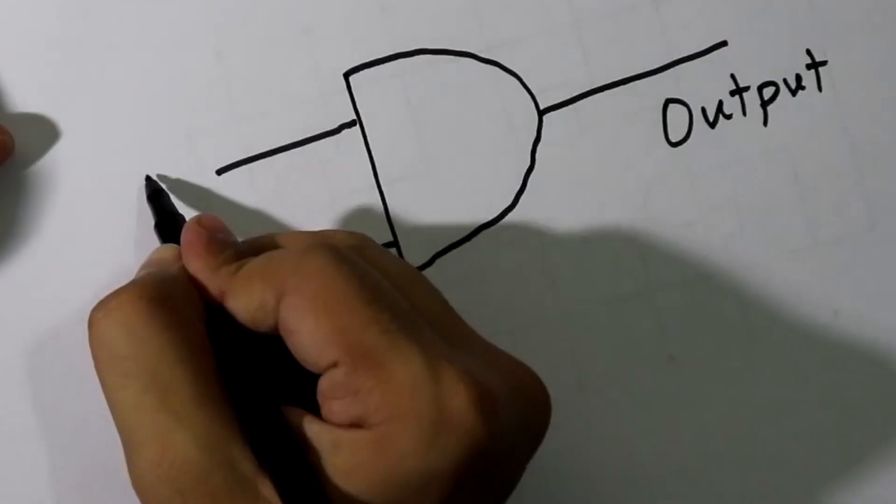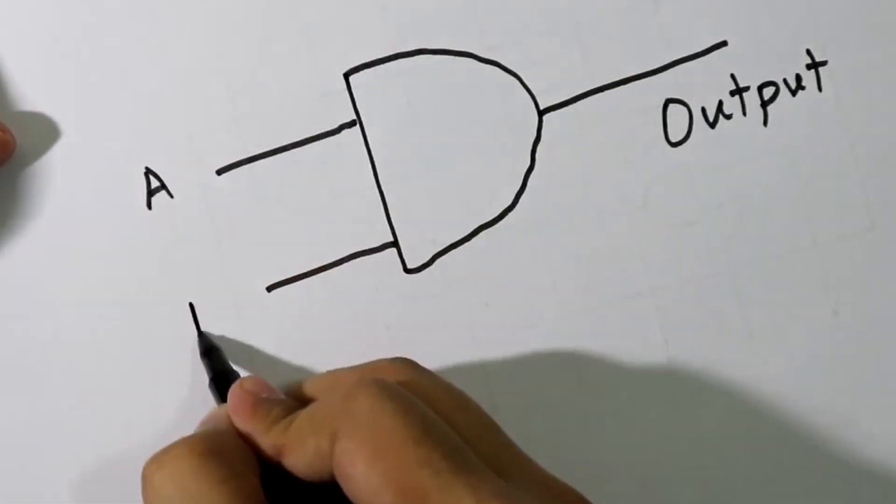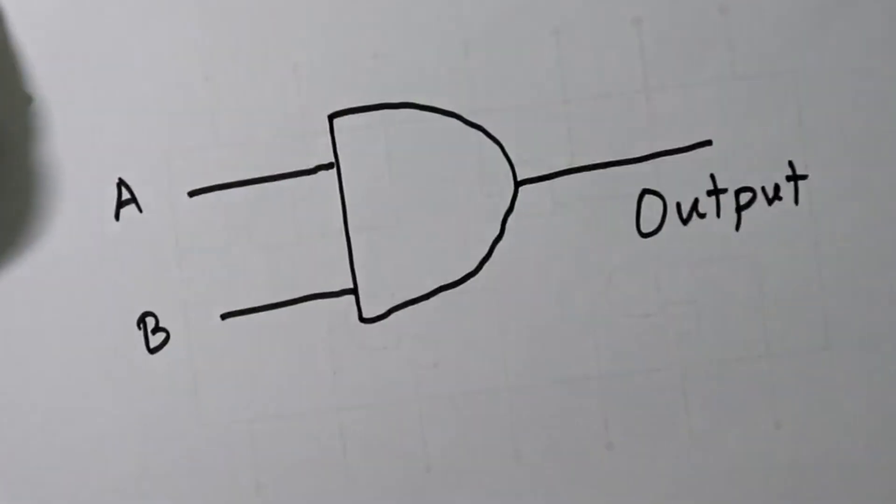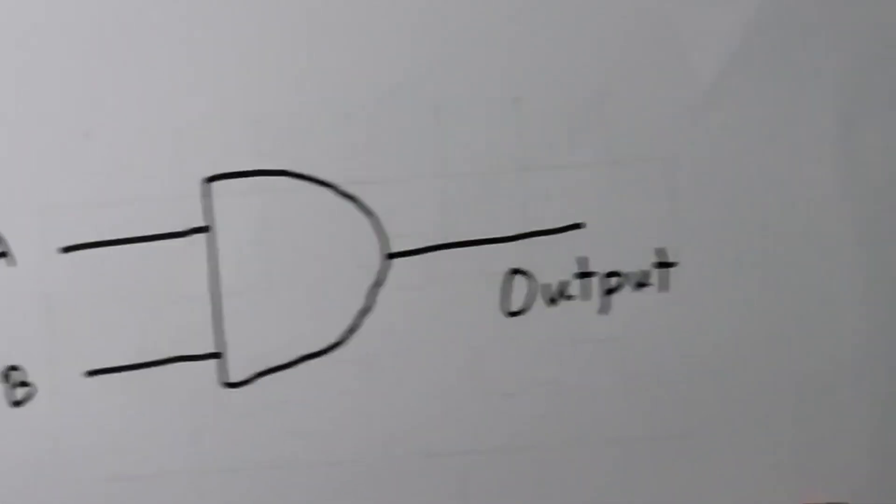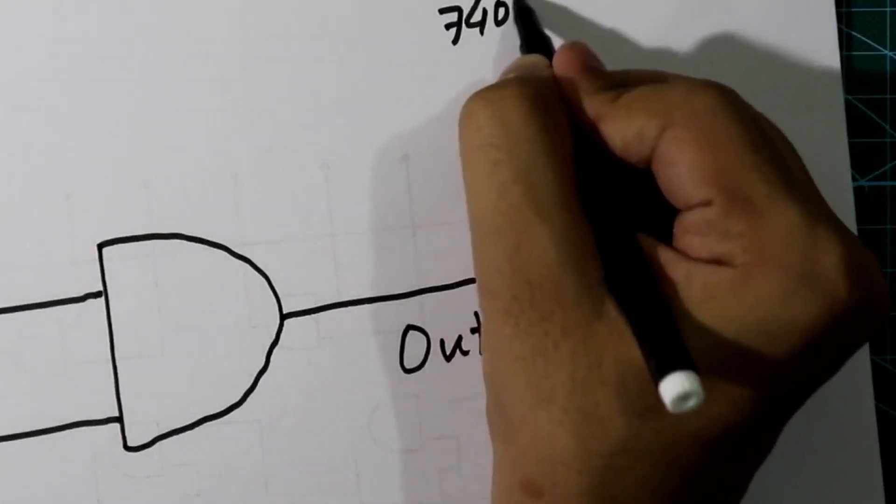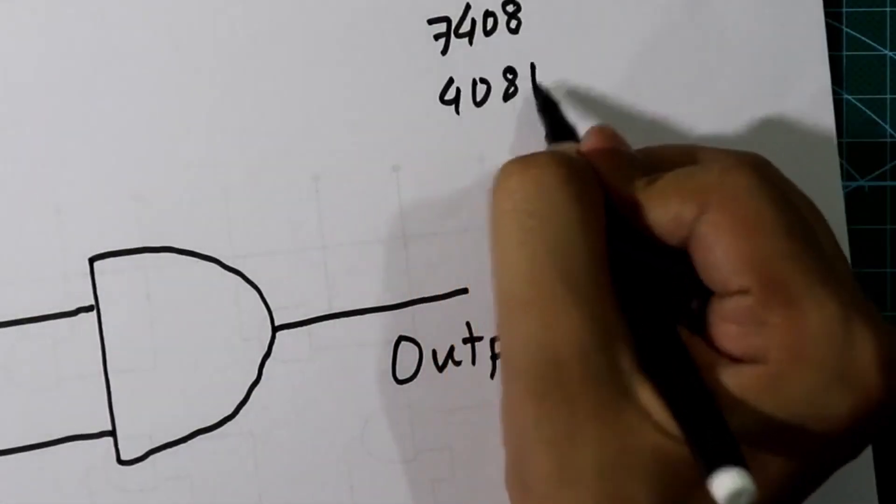This is the symbol of AND gate. Here it is input A and here it is input B. So it is a two input AND gate. We have AND gate IC 7408 or 4081.